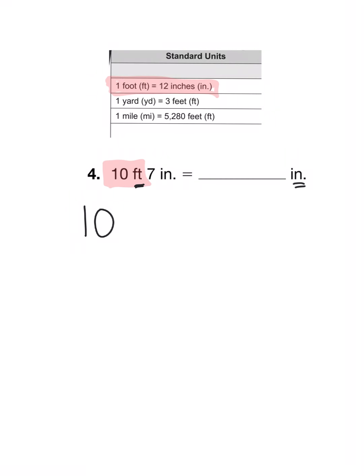I'm going to multiply my 10 feet times 12 inches in a foot and this is easy to do in my head. To multiply something times a multiple of 10, I just need to multiply my non-zero digits. So 1 times 12 is 12 and then add my 0. So that gives me 120 inches and then I just need to add my remaining 7 inches. 120 plus 7 gives me 127 inches.